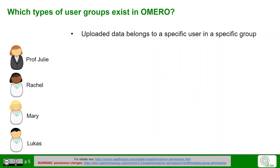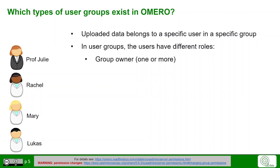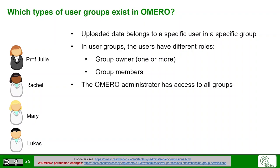Data that is uploaded to OMERO belongs to a specific user in a specific group. In those groups, users may have different roles. There is at least one group owner and the others are group members. The OMERO administrator always has access to all groups. Only the group owners and the OMERO administrator can change the group permission levels in OMERO.